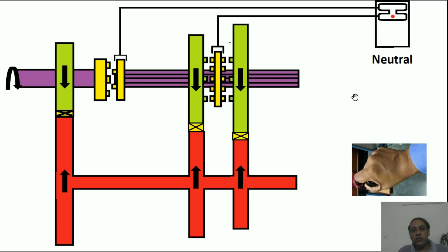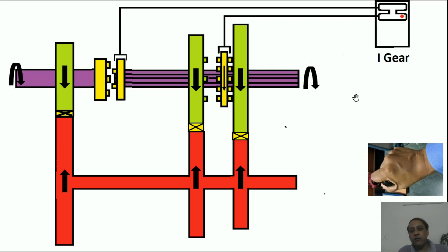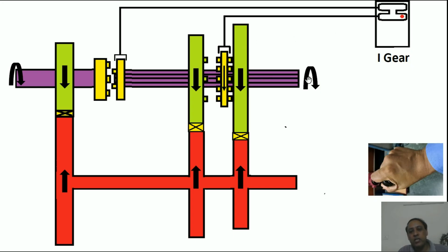Right now it is in neutral. For first gear, power is reaching both driven gears; however, it was not transferring to the splined shaft because the dog clutch was not shifted. Now the dog clutch is shifted and the face teeth are matching with the driven gear's face teeth. From this driven gear to the dog clutch and then to the splined shaft, power is out. This is first gear because the driven gear is of bigger size compared to the driver gear on the layshaft.